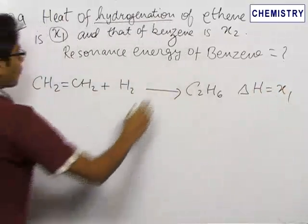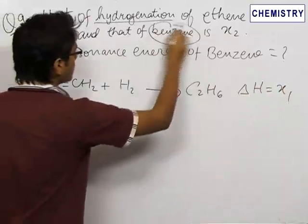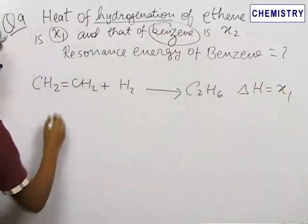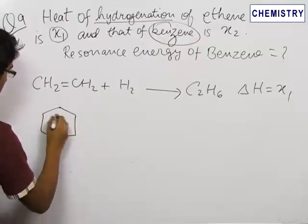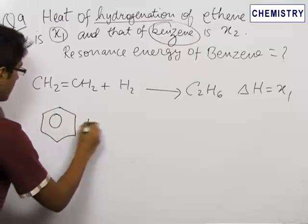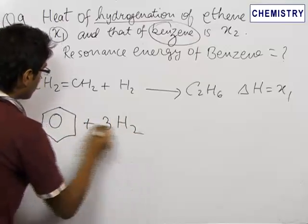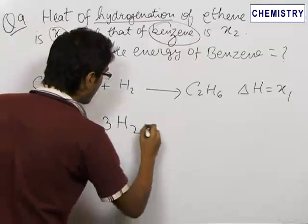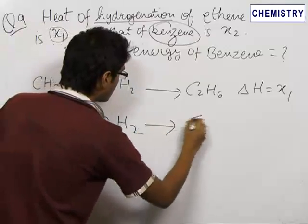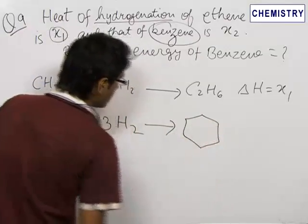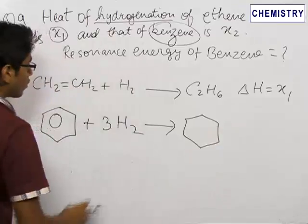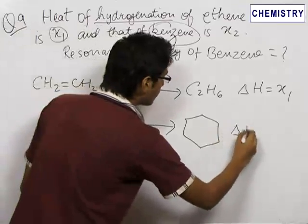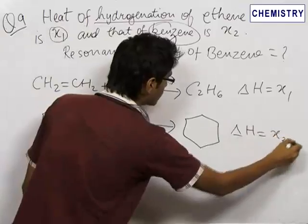Now, let us write the equation for benzene — or resonating benzene, for that matter. Since there are three double bonds involved, we would need three moles of hydrogen to convert it into cyclohexane. The amount of heat involved is x2.